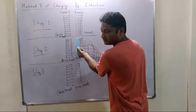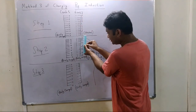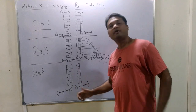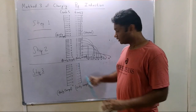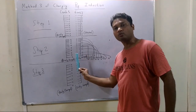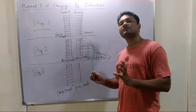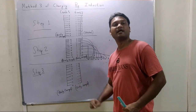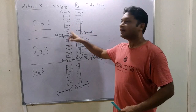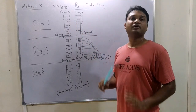After grounding, the left side of comb 2 is negatively charged, and the right side — which was initially positive — is now neutral. In step 3, we remove the ground wire. The negatively charged electrons on the left side of comb 2 remain, and comb 2 becomes negatively charged. We have successfully charged comb 2 without touching the positively charged comb 1. This method is known as charging by induction.